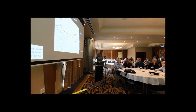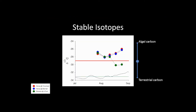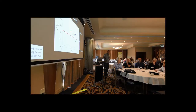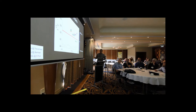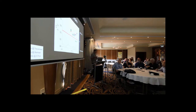A slightly different story with our stable isotopes. At Tocumwal and in Barmah it's very much an algal-derived food source. Slightly different in the Edwards River, where we had a depletion indicating that flows were leaking some water back out into the Edwards, carrying dissolved organic carbon which was being incorporated into the biofilm matrix — so there was some contribution of terrestrial carbon into the food web.